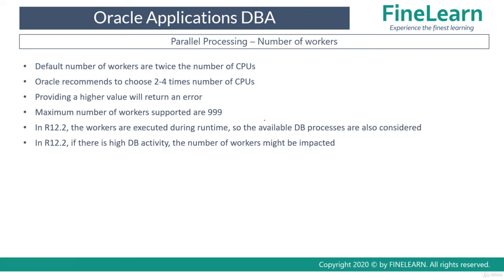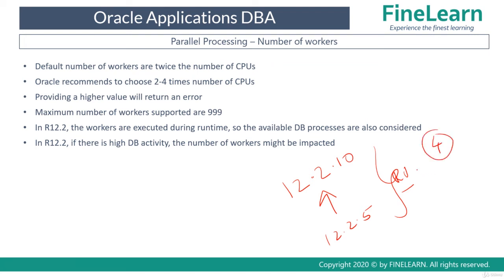The number of workers depends on the activity. Applying a Release Update Patch - for example upgrading from 12.2.5 to 12.2.10 - can involve 25,000 to 30,000 jobs. Using only four workers for such an activity would take a very long time. Based on the number of CPUs you have, you can give up to two to four times the CPU count as workers. For an eight-core system with eight threads, you could give 16 or 24 workers, meaning up to 24 jobs can run simultaneously.